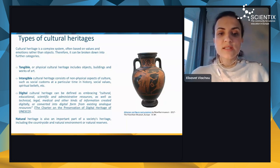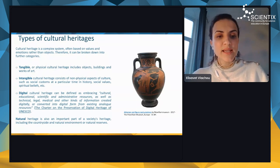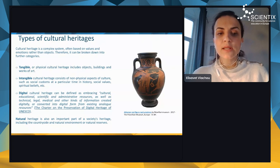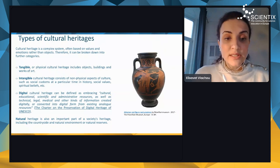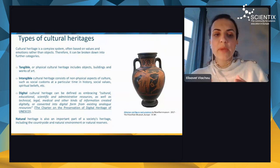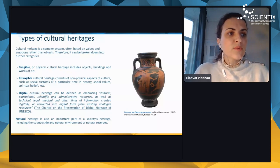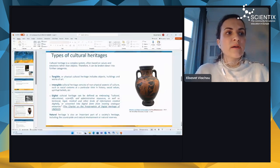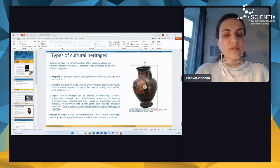Then we have digital cultural heritage, which can be defined as embracing cultural, educational, scientific, administrative, technical, legal, medical, and other kinds of information created digitally or converted into digital form from existing analog resources. An example here is a 3D object where you can see all the different angles and types.